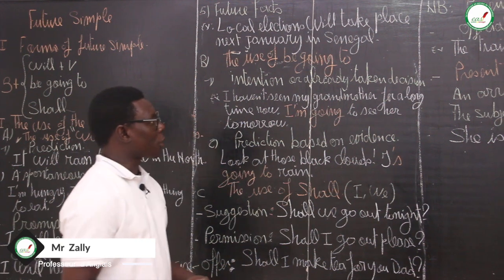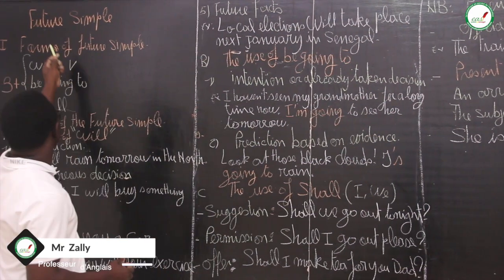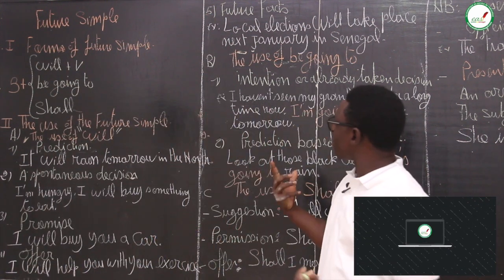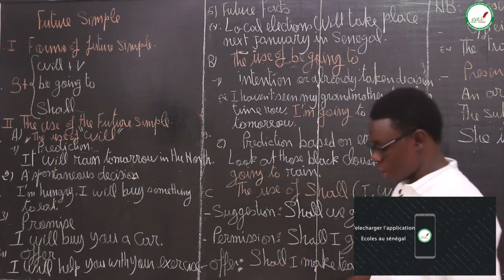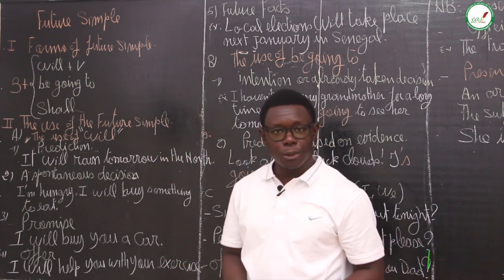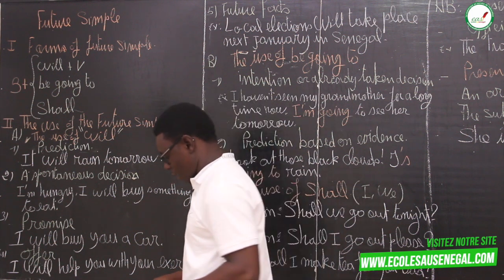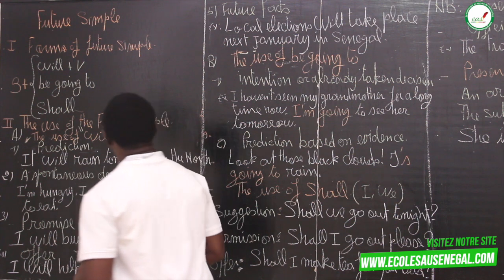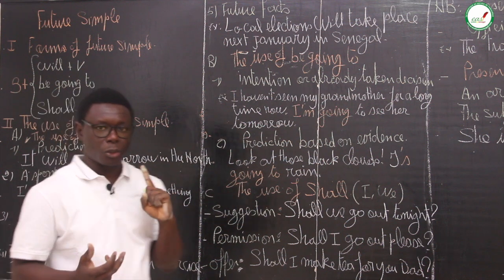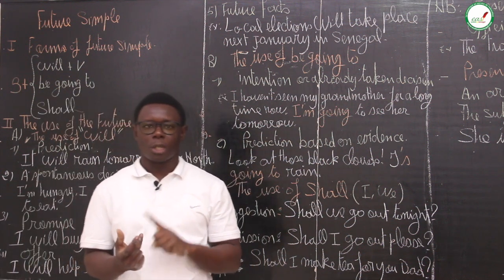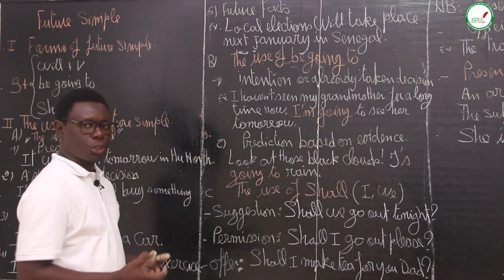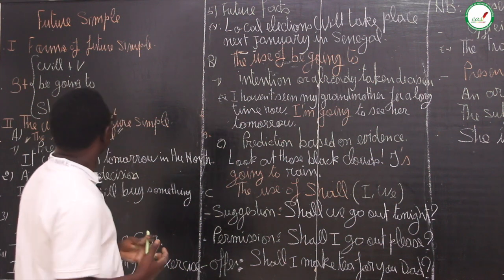Now, we are going to tackle another tense, which is the future forms. We have dealt with the past perfect simple and past perfect continuous. Now, we are going to tackle the future forms. Future forms are tenses that talk about the future. So, we have among them the future simple, the future continuous, the future perfect simple, and the future perfect continuous. So, let us start with the future simple.